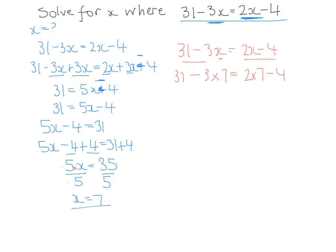So there was a 7 in place of the x, there's now a 7. 31 minus, now 3 times 7 is 21. 31 take away 21 is 10. And on the other side here, 2 times 7 is 14. 14 minus 4 is 10 again.